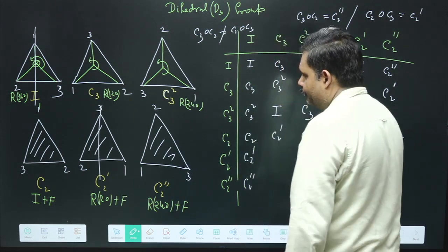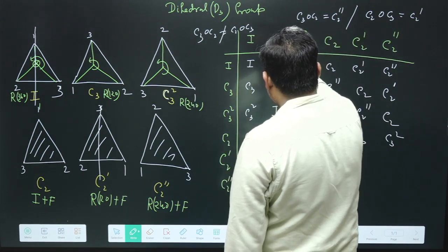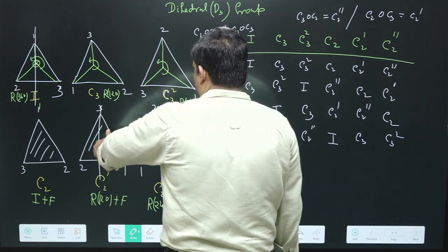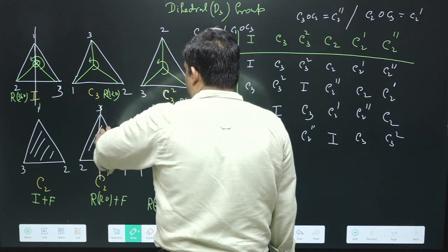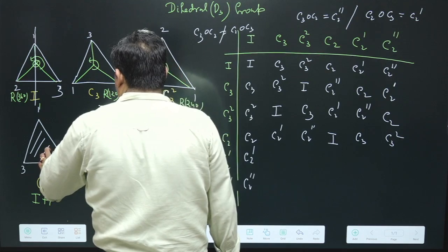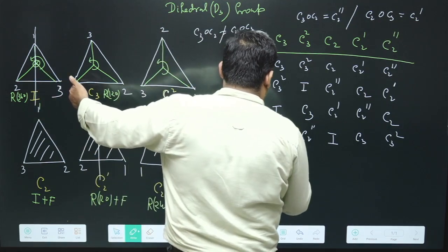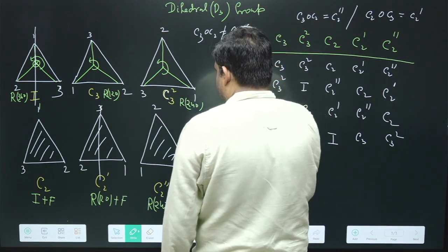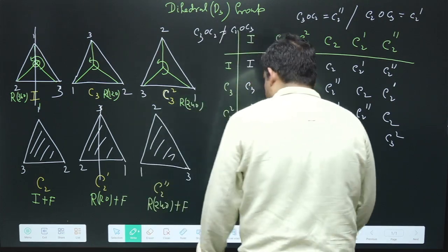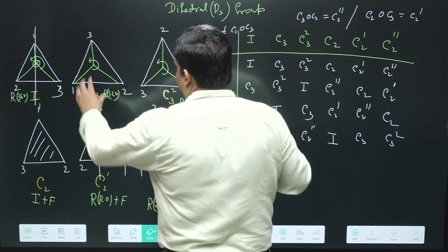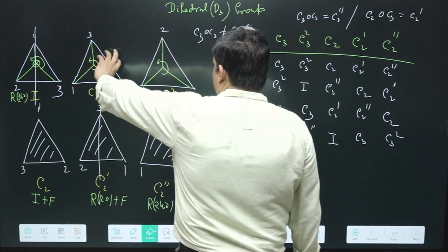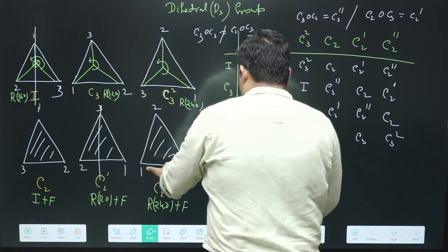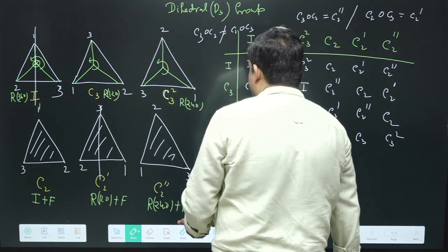For C2' composed with C3: first rotate 120 degrees from the C3 configuration to get one arrangement, then flip to get the result. For C2'' composed with C3: rotate 120 degrees from C3, getting one conjugation, then flip — giving C2''. Now for C2' on C3²: rotate 120 degrees to get one configuration, flip to get C2.